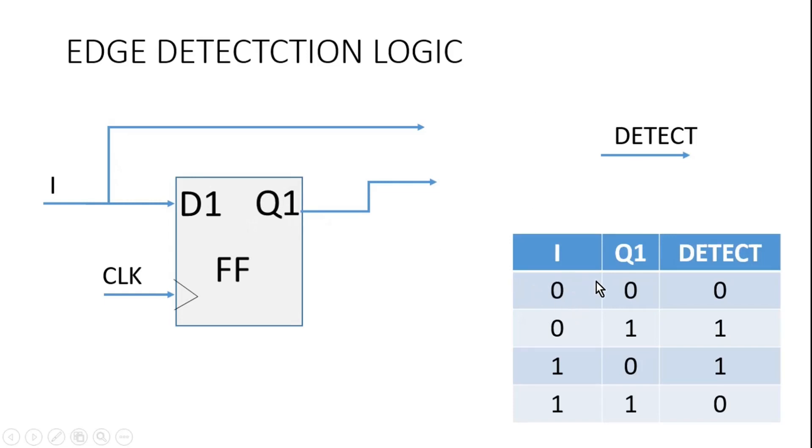So this is a truth table. Let me explain how it works. When input I is 0, Q1 is 0, detect should be 0 because input is not changing. When input I is 0, Q1 is 1, that means now input has changed from 1 to 0, so detect should go high.